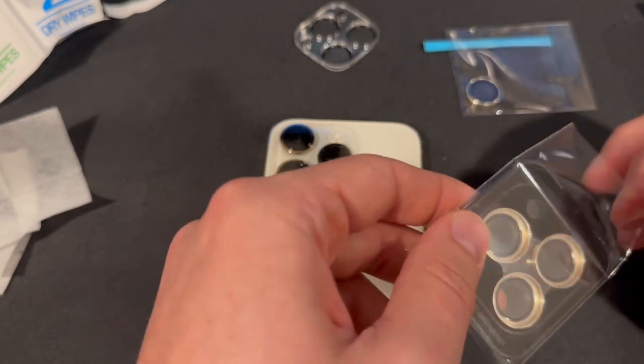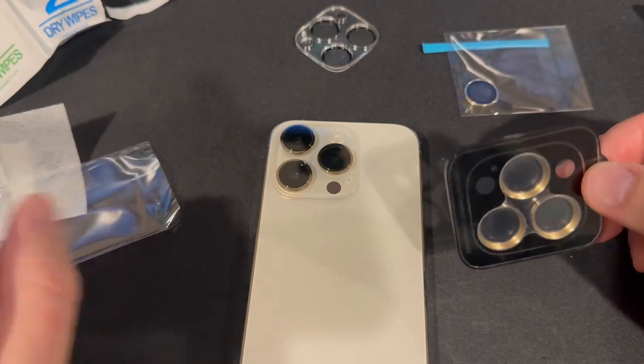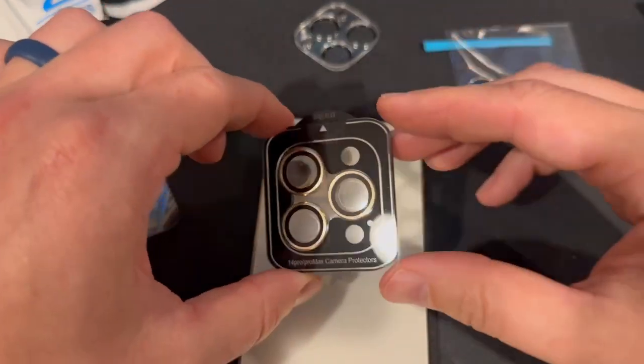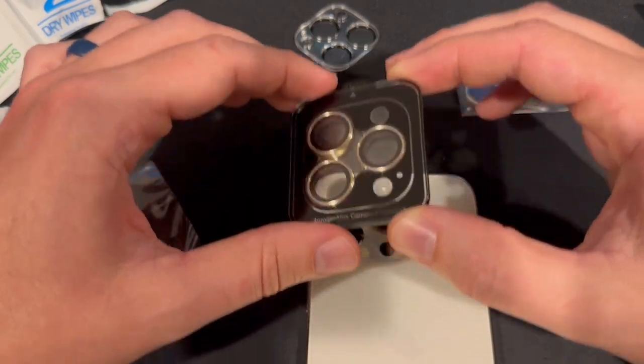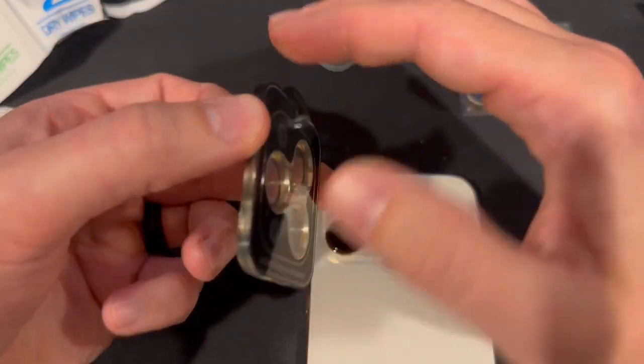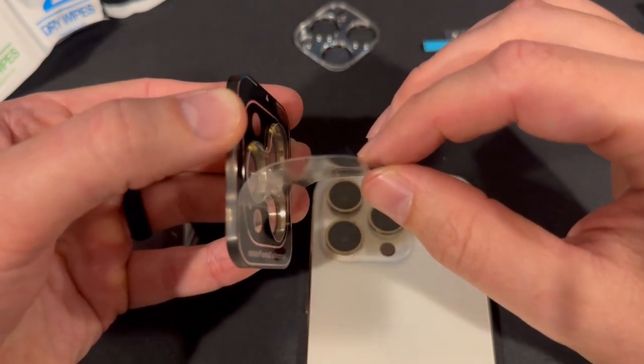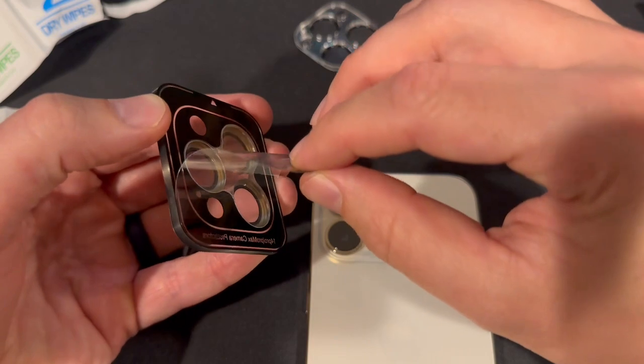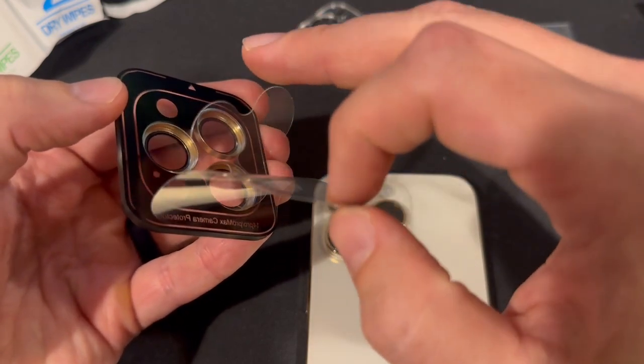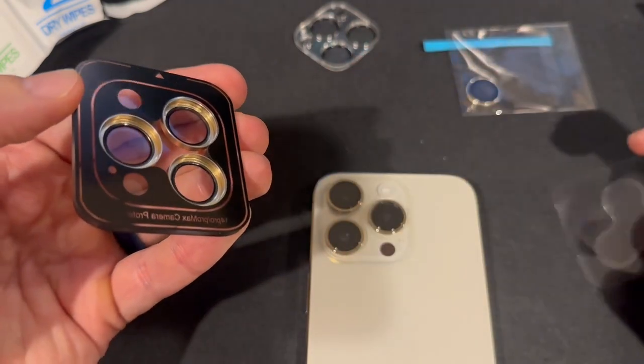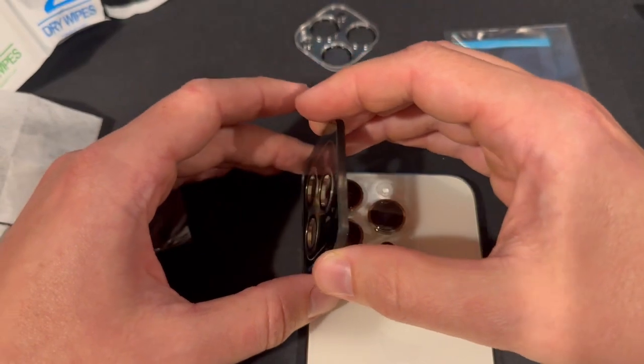This is where the real action is. We're going to open up this little bag, pull this guy out. We're going to get it lined up just to make sure we know where this is going before we take this little backer off. Now we peel this backer off being careful, getting that little piece of plastic out.